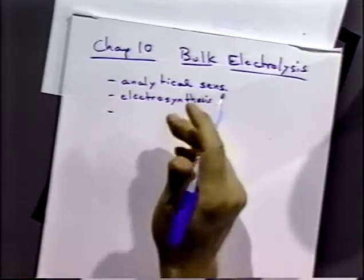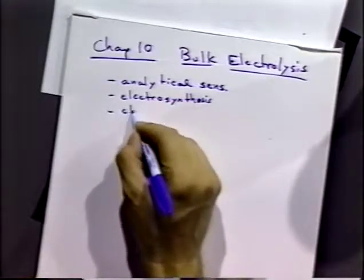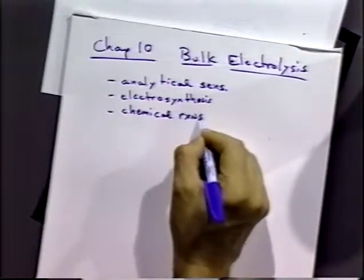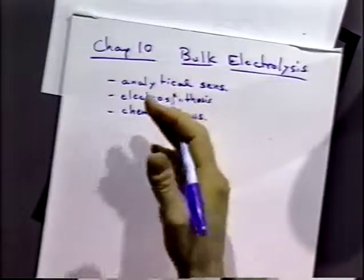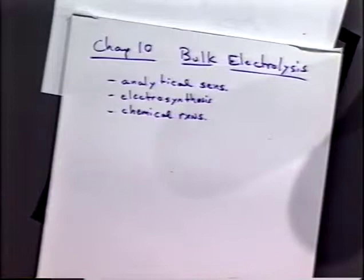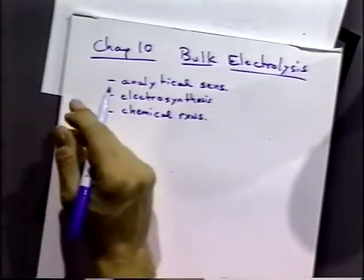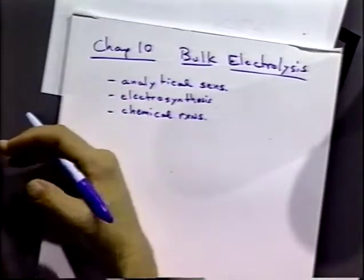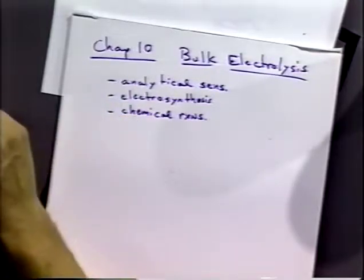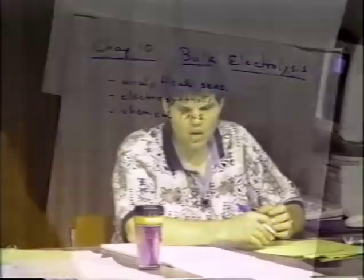By doing a bulk electrolysis, we can often examine chemical reactions. For example, one way to study what happens when we do a reduction process with an accompanying follow-up reaction is to do a bulk electrolysis, let the reaction occur, and then use some other method — say chromatography — to analyze the products. By doing bulk electrolysis we can study the products and get information about what's going on.